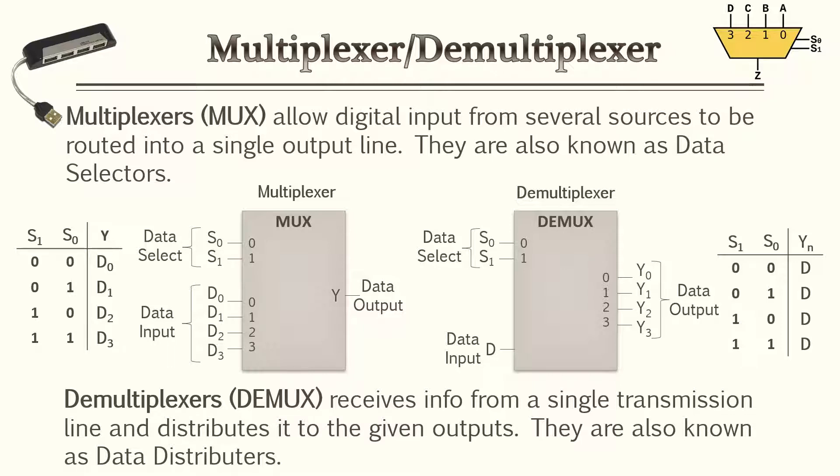And of course, we have a device that performs the opposite function, demultiplexers. This receives data from a single transmission line and distributes it to the given output. This is known as data distributors. And you'll see this application very common in USB hubs. Now that we get a little bit familiar with these devices, let's see if we can perform some example problems.